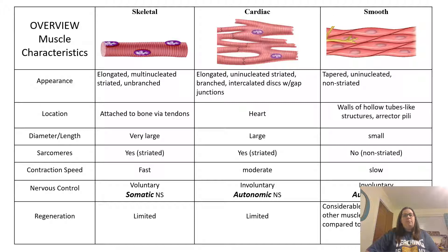For cardiac muscles, those cells are also elongated but uninucleated, with one nucleus. They are also striated because they have sarcomeres, and they're branched. They have intercalated discs, and these discs have gap junctions so that these cells can communicate and contract all together in unison. This is found in your heart. Their diameter and length is still pretty large, they have a moderate contraction speed, their control is involuntary by the autonomic nervous system, and their regeneration is limited.